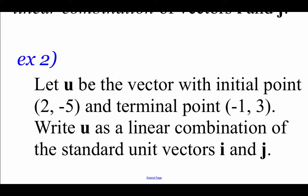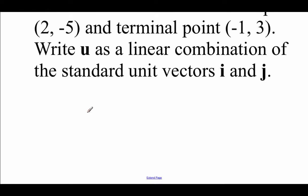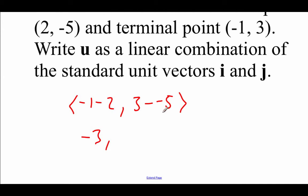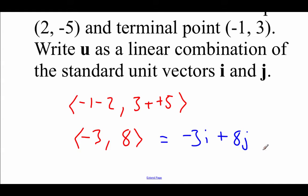In this example, we've got u with initial point 2, negative 5 and terminal point negative 1, 3. We're going to write vector u as a linear combination of i and j. First we get the vector in component form: x is terminal minus initial, giving negative 3, and y is terminal minus initial, giving 8. So we get the vector negative 3, 8. Writing it as a linear combination: negative 3 times i plus 8 times j. That's vector u as a linear combination of i and j.